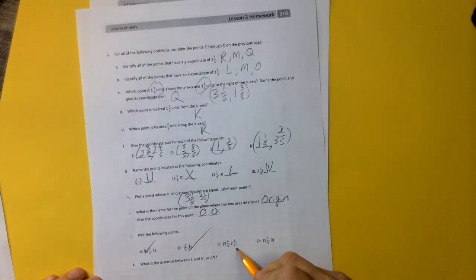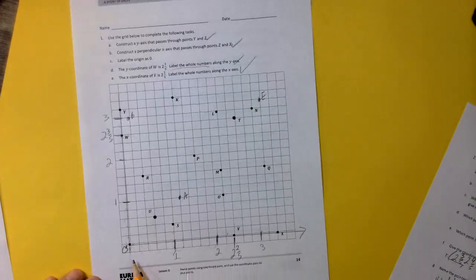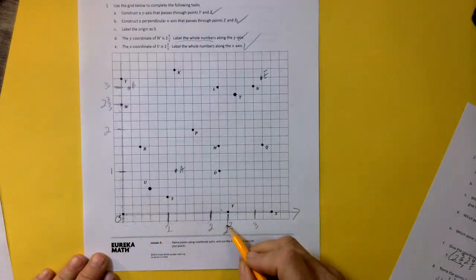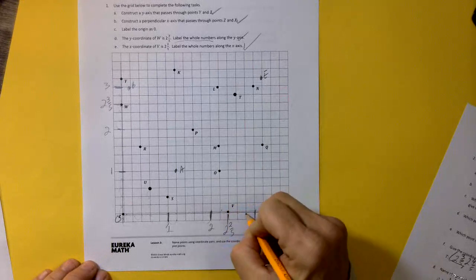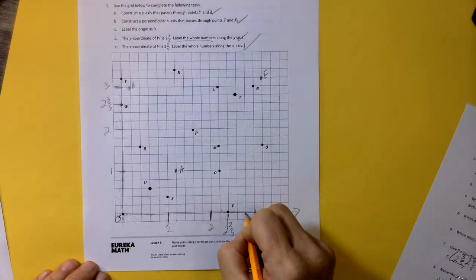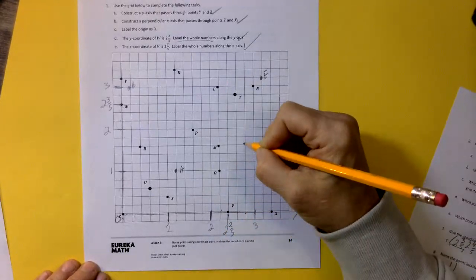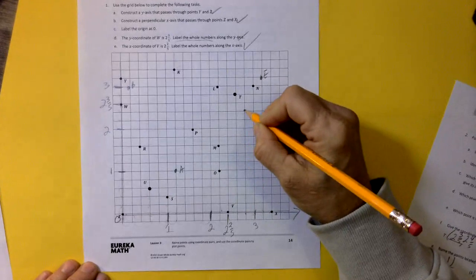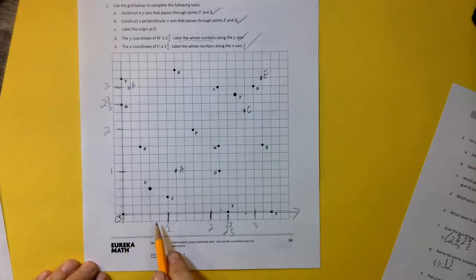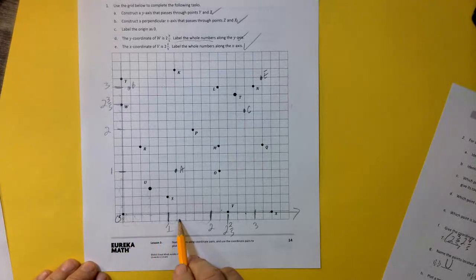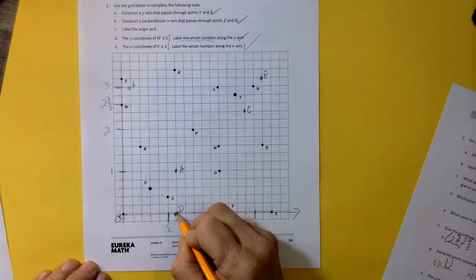C, 2 and 4 fifths and 2 and 2 thirds. So 2 and 4 fifths. So we go over 2 and 1, 2 fourths, 2 fifths, 3 fifths, 4 fifths. And up. I thought it was up. 2 and 2 fifths. So up to 2 and then 1 fifth, 2 fifths. That's C. And the last one, 1 and 1 fifth, 1 and 1 fifth. So I'm right here and up 0. And that's going to be D.